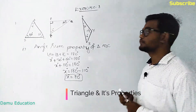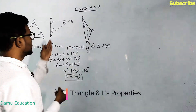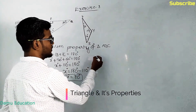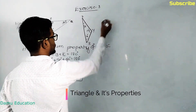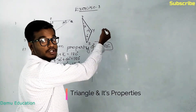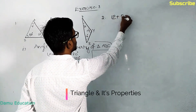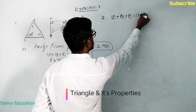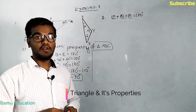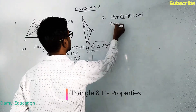For the second question, we use the same angle sum property for triangle PQR. Angle P plus angle Q plus angle R equals 180 degrees. Angle P is 90 degrees, angle Q is 30 degrees, and angle R is X degrees.